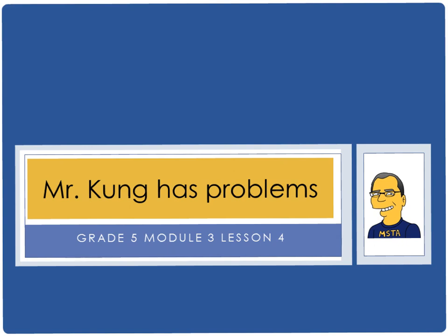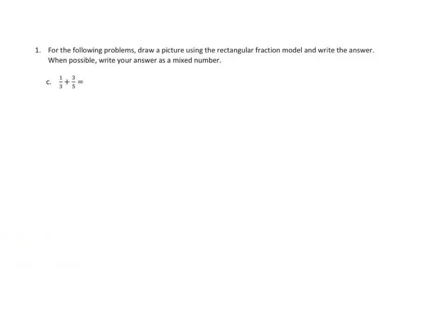Tonight we are adding fractions with sums between 1 and 2. Previously we've done very similar work, but usually we've ended up with answers below 1. Today we're definitely going to end up with answers larger than 1, so more than 1 whole. This will mean simplifying our improper fractions into mixed numbers. Let's take a look at a couple of problems from tonight's homework.